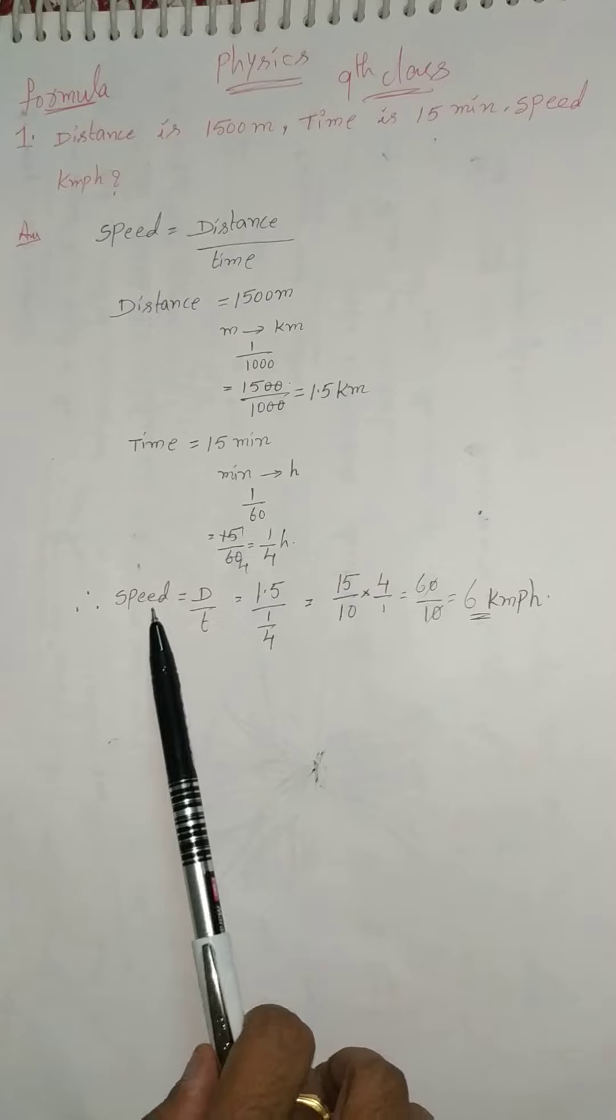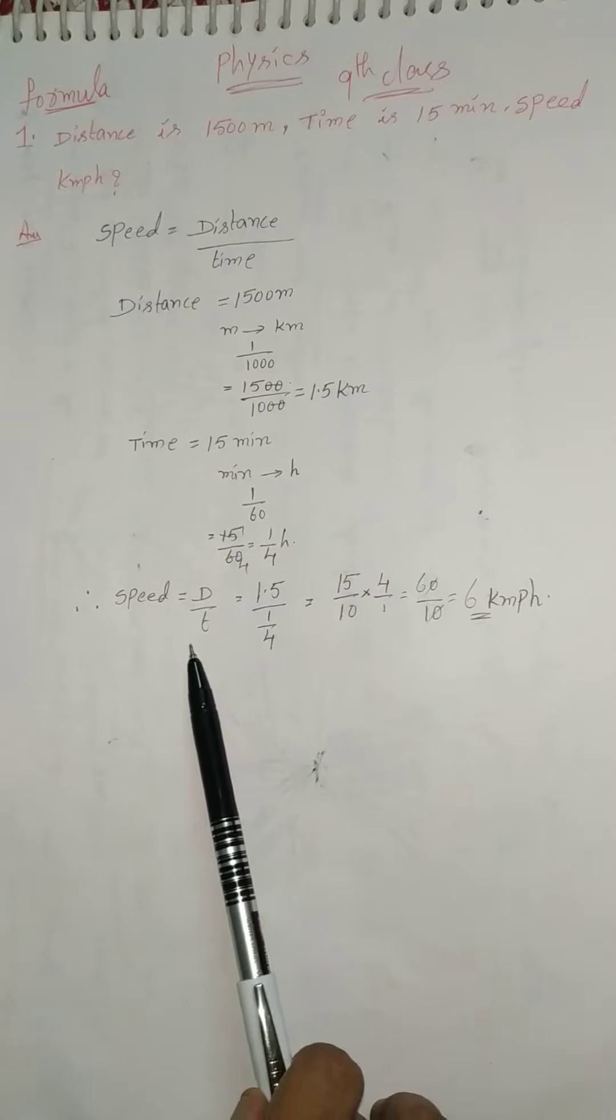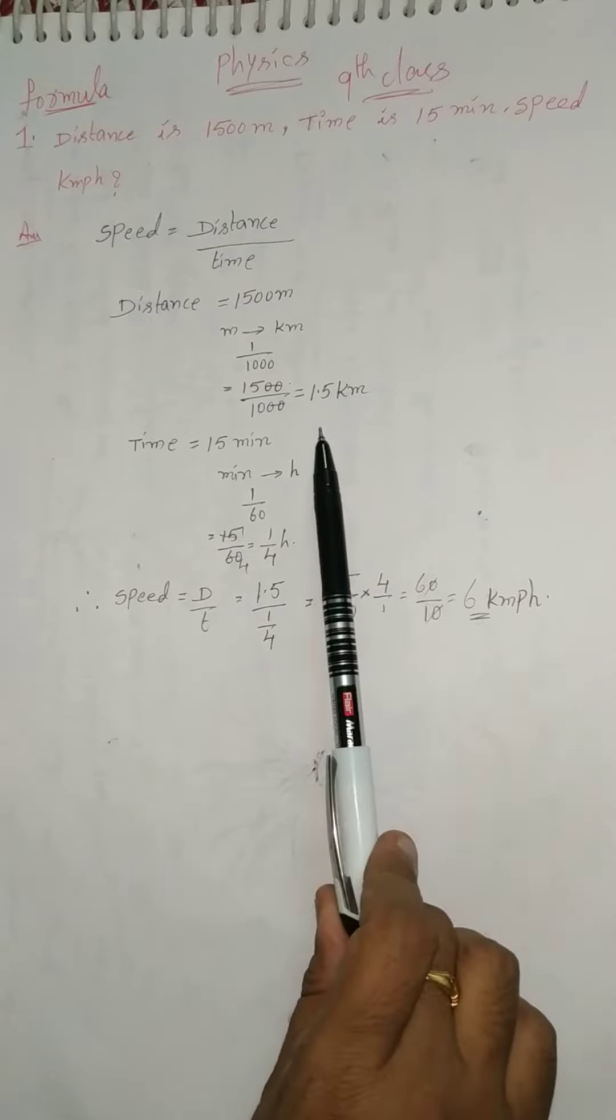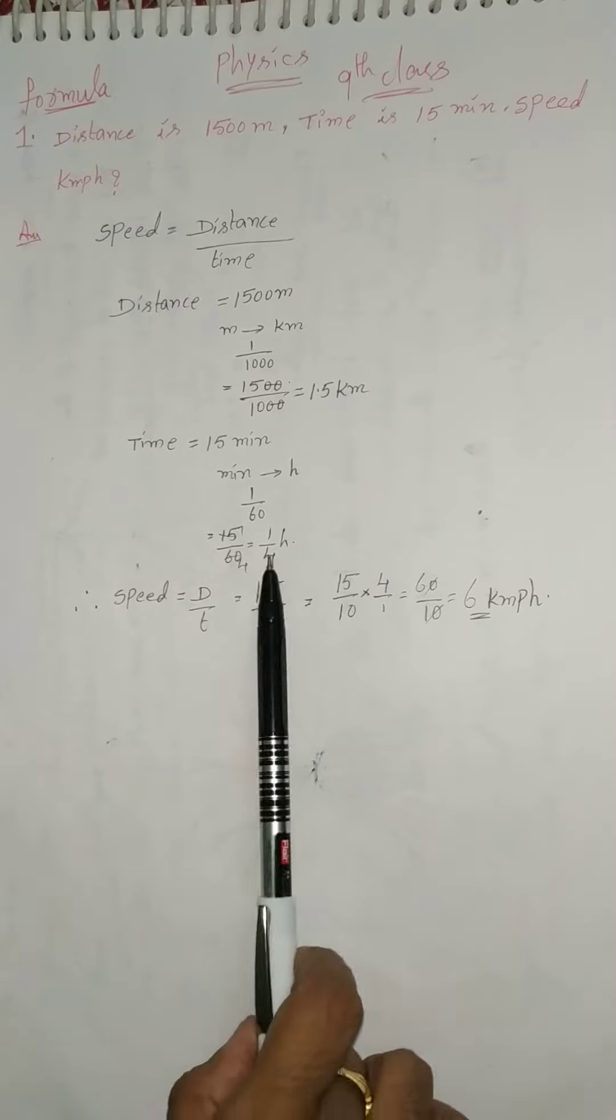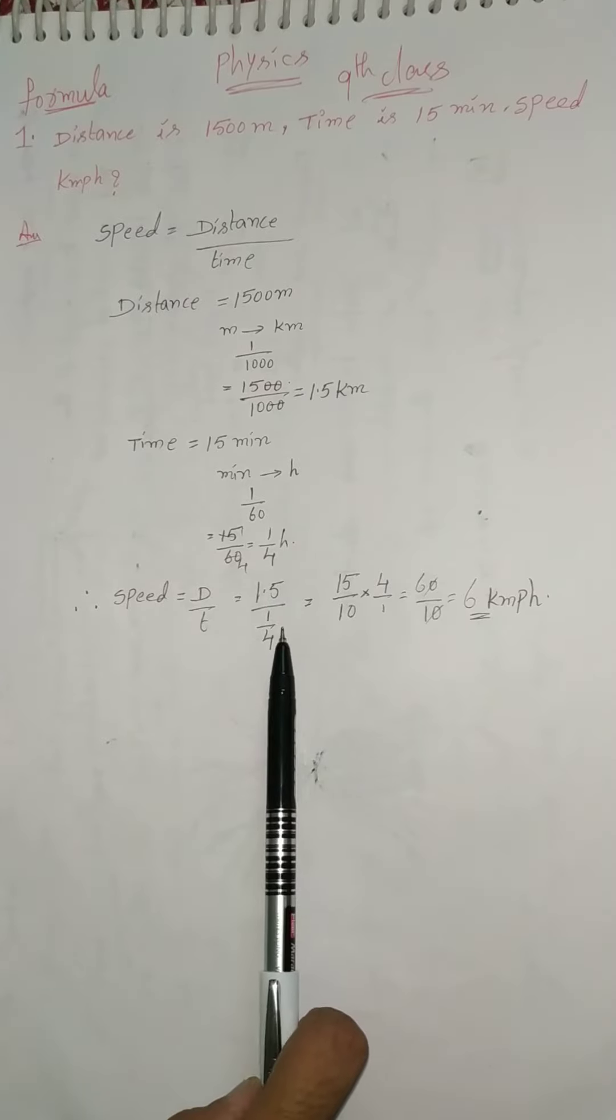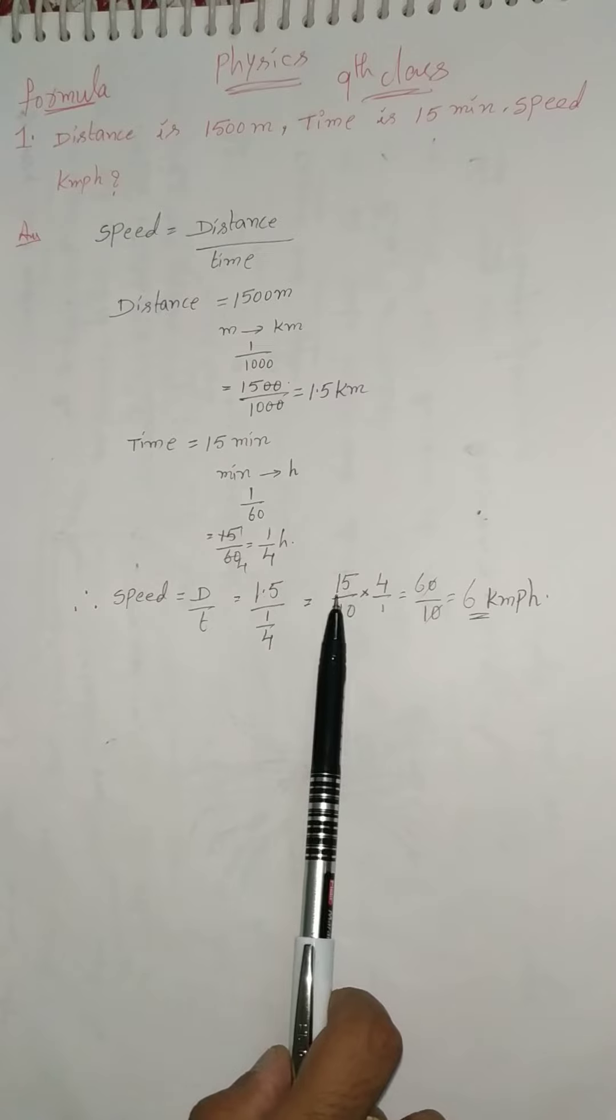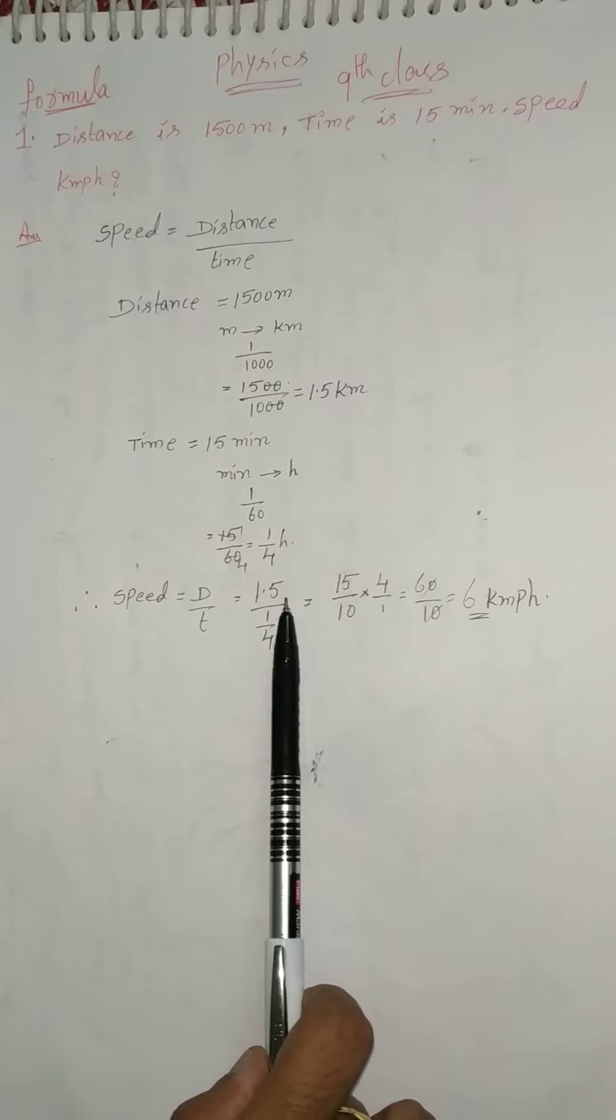So speed equals distance by time. Distance equals 1.5 kilometers, time equals 1 by 4 hours. So simply we write 1.5 means 15 by 10. Into this, 1 by 4 in the multiplication we write as 4 by 1.